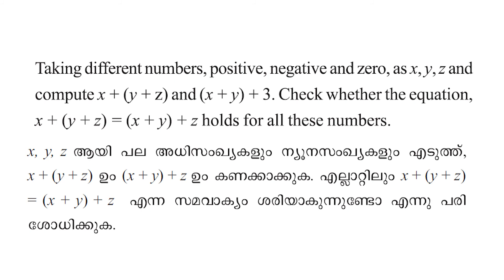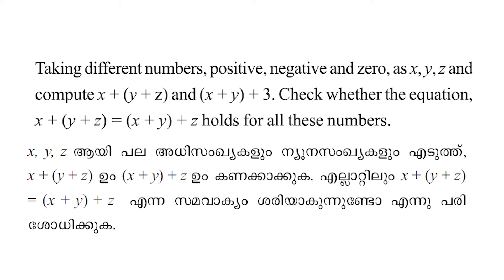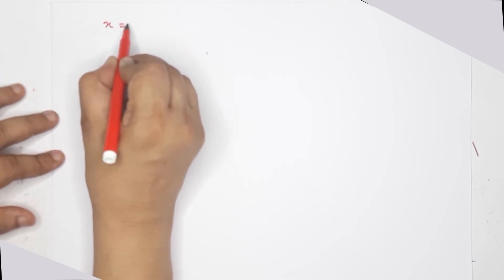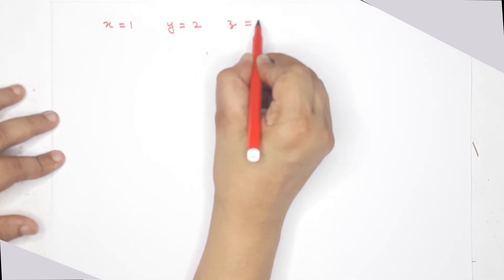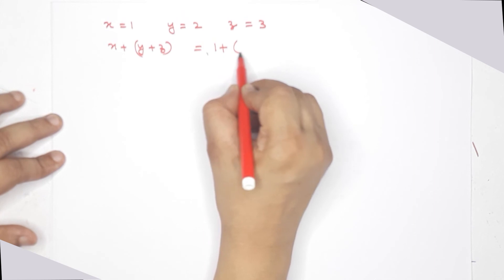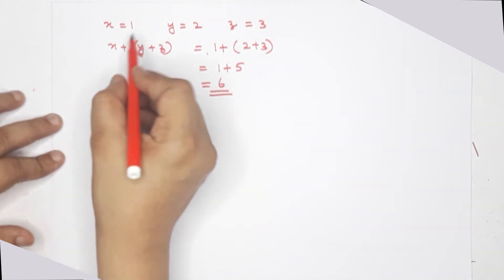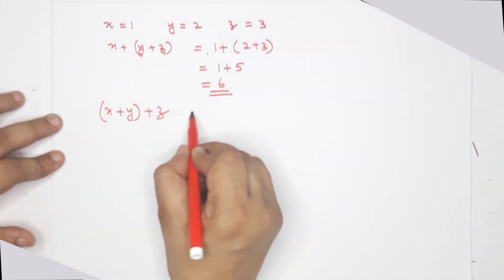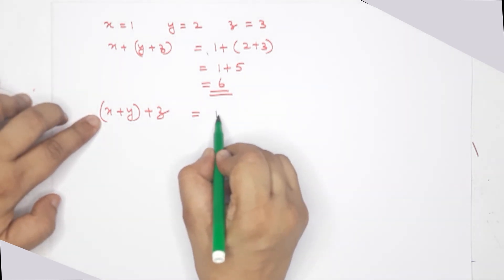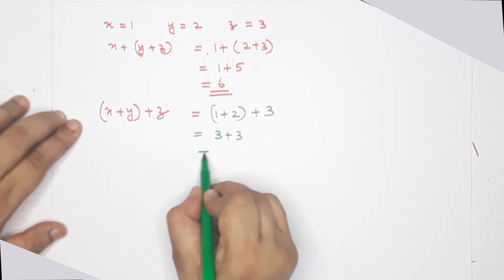This is the last question: taking different numbers — positive, negative, and 0 as x, y, z — compute x plus y plus z and x plus y plus z, and check whether the equation x plus (y plus z) equals (x plus y) plus z holds for all these numbers. Let's say x equals 1, y equals 2, z equals 3. Then x plus y plus z: 1 plus 2 plus 3, that means 1 plus 5, that means 6.